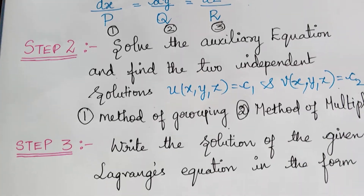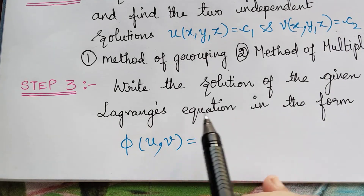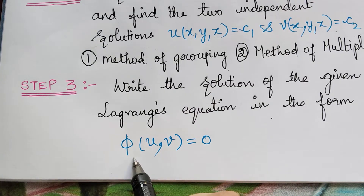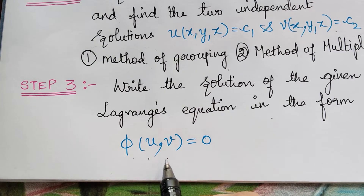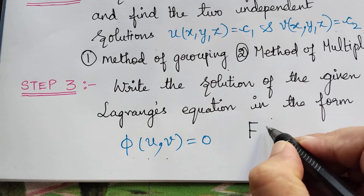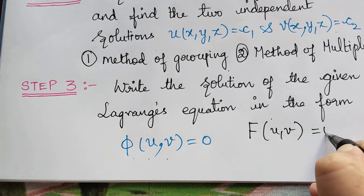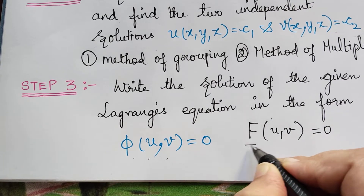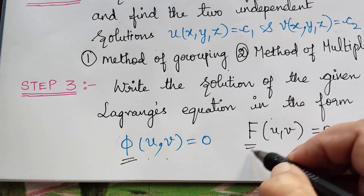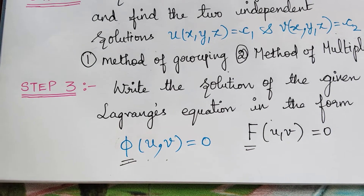As the third step, we write the final solution of the given Lagrange's equation, which takes the form phi(u, v) = 0, or equivalently F(u, v) = 0. This is just a matter of representation — you may use phi or capital F as per your prescribed textbook.